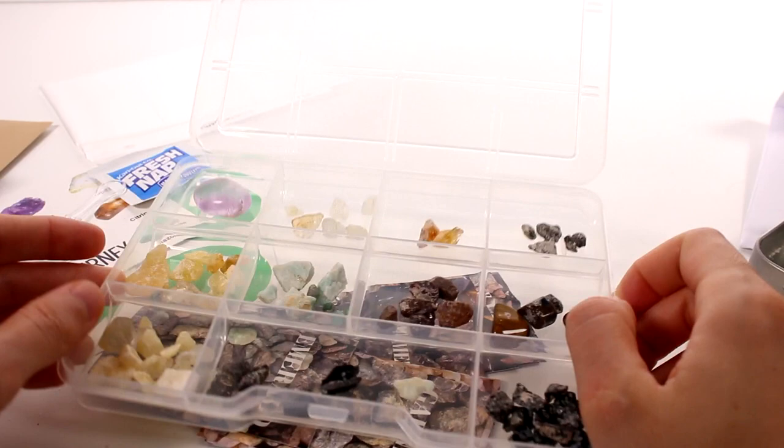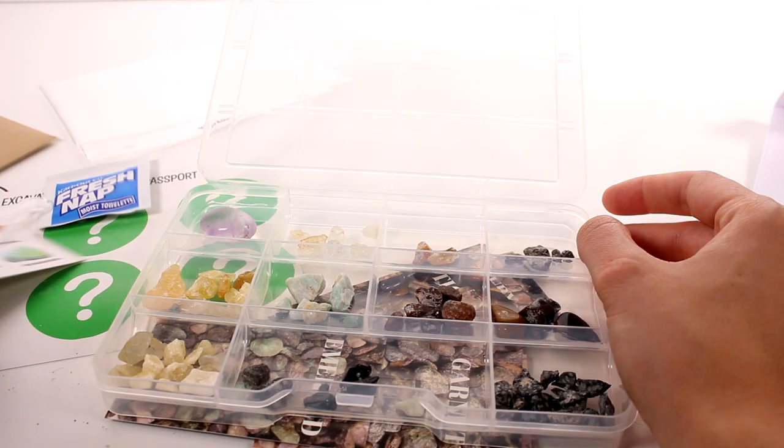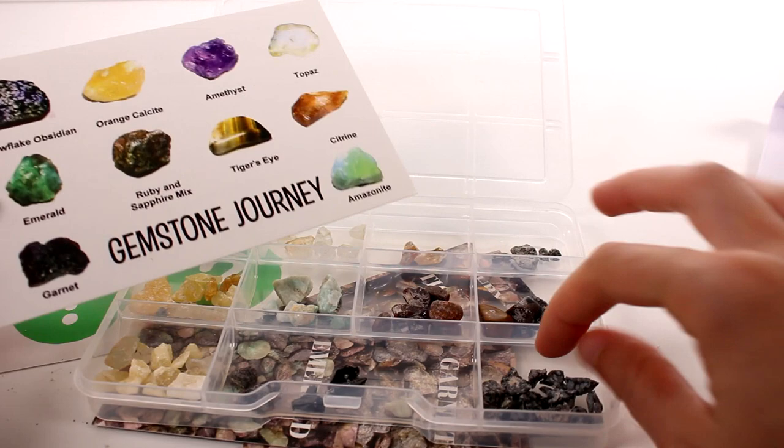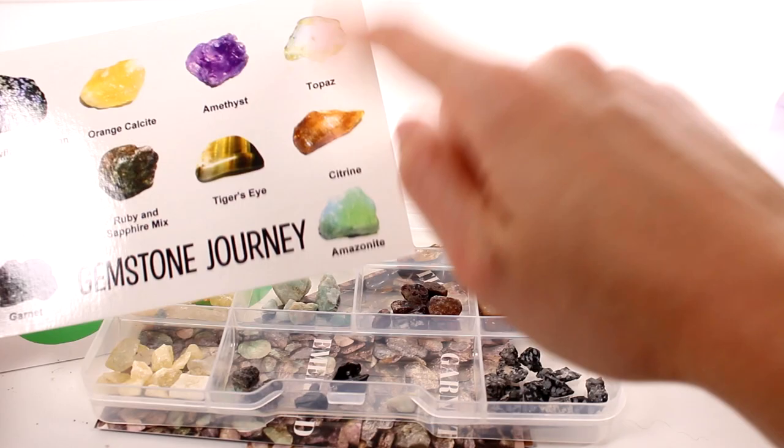All right you guys, I tried my best to sort them. Some of them got a little confusing because these are two different shades of yellow and everything, but let's check out this. So we do have snowflake obsidian. That's one that was my favorite with the little spots. We have the orange calcite and the topaz.